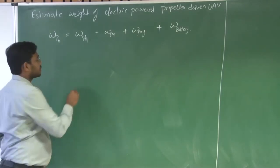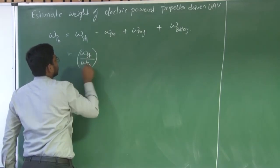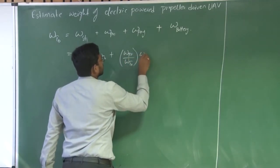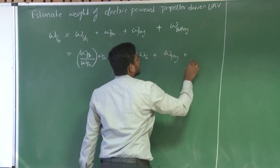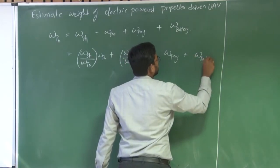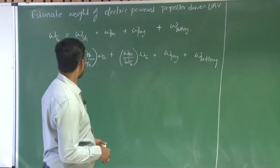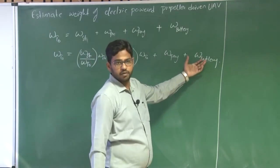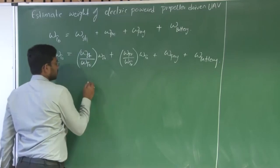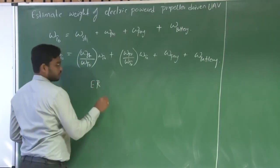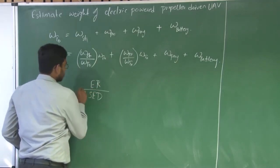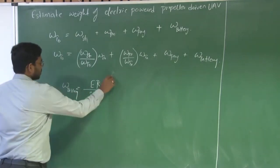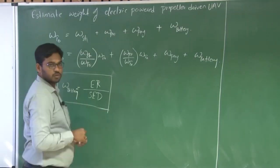We can express this equation in terms of weight ratio. The propulsion weight ratio times the total takeoff weight, and payload is a given input, and W battery needs to be estimated as per the requirement. In our previous lecture, we solved an example where we figured out what should be the weight of the battery depending upon the energy requirement of the system. Energy required divided by specific energy density gives the total weight of the battery required, with some efficiency factors. By using this, we estimated the total weight of the battery.